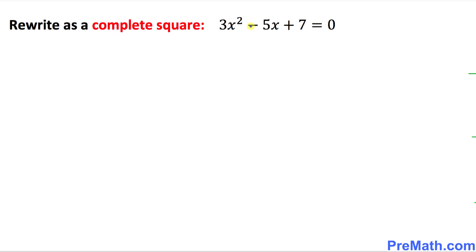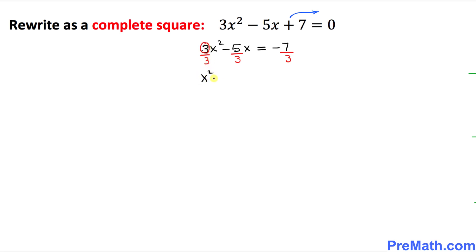Here is our last example. Once again we want to make sure that we have only x variables on the left-hand side. That means this constant positive 7 must go on the other side, so we ended up with 3x squared minus 5x equal to negative 7. Now our leading coefficient is 3, and we want to make sure that it must be 1, so we're going to divide everything by 3. We must divide each and every term by 3 across the board, giving us x squared minus 5 over 3 times x equal to negative 7 over 3.